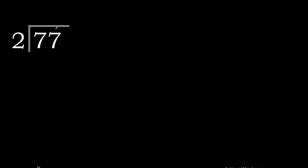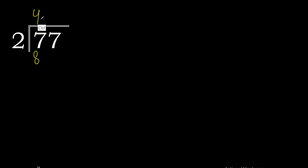77 divided by 2. 7 is not less than 2, therefore start with 7. 2 multiplied by 4 is 8, excessive. Multiplied by 3 is 6. 7 minus 6 is 1, bring down: 17.